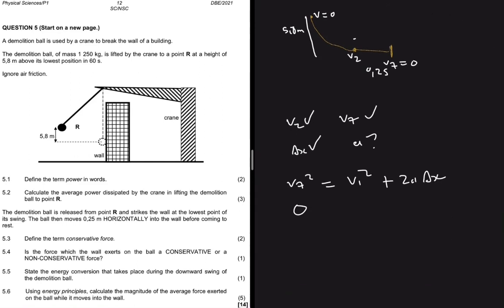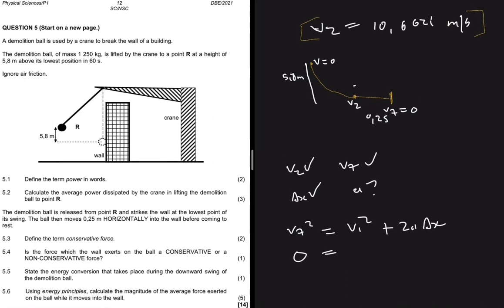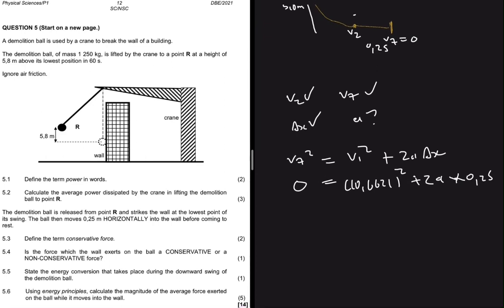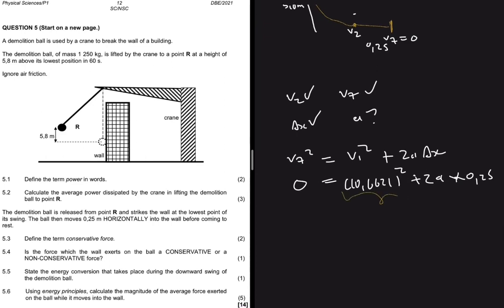v_f squared, it comes to rest so it's zero. v_i is 10.6621 squared plus two, acceleration is what we're interested in, and then multiply by 0.25. So we're gonna take this term to the left-hand side. We're gonna get minus 10.6621 squared equals to 0.5 acceleration.